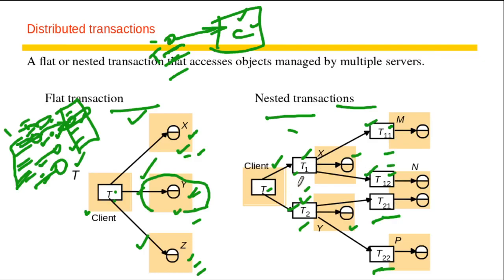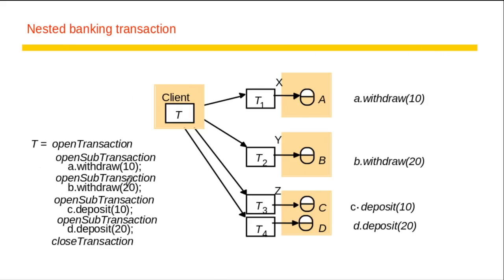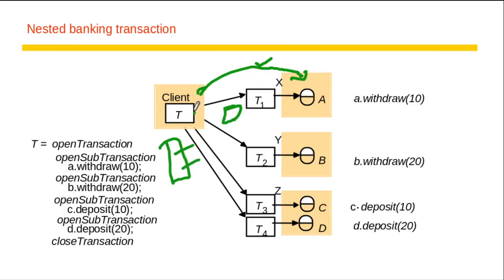Sub-transactions at one level can execute simultaneously or concurrently. For example, if the client creates sub-transactions — say four sub-transactions — the whole transaction is divided into parts. A transaction opens and between its opening and closing it opens sub-transactions to execute on different servers: A, B, C, and D, each with their respective data objects.